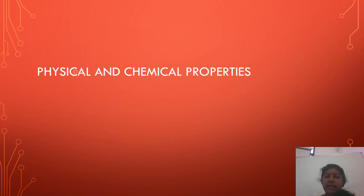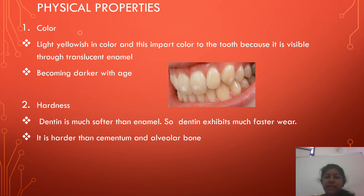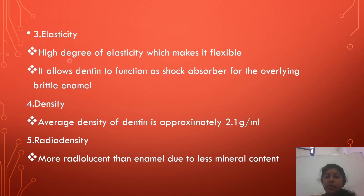Coming to the physical and chemical properties of dentine — physical properties. Dentine is slightly yellowish in color, which imparts color to the tooth because it is visible through the translucent enamel, and its color darkens with age. Dentine is much softer than enamel, so it exhibits much faster wear, and it is harder than cementum and alveolar bone. It shows a high degree of elasticity which makes it flexible and allows dentine to function as a shock absorber for the overlying enamel.